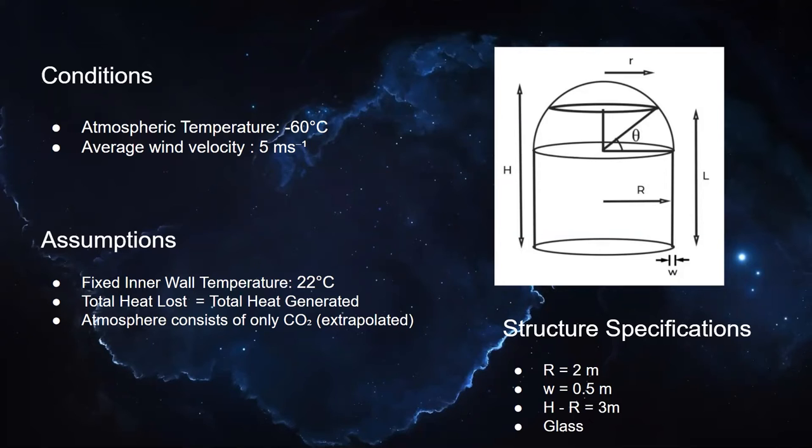The inner radius being 2 meter, width of the walls being 0.5 meter, the height of the cylindrical part being 3 meter, and the structure to be composed of glass.